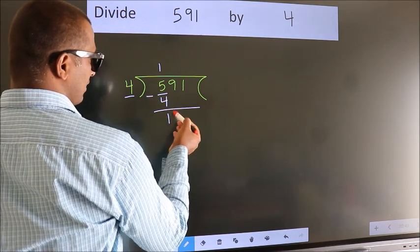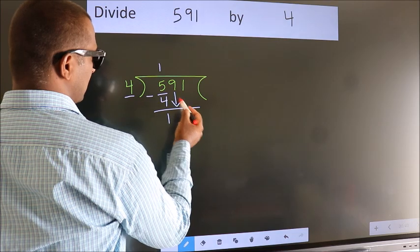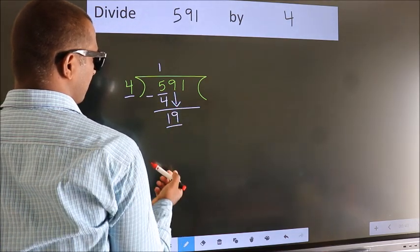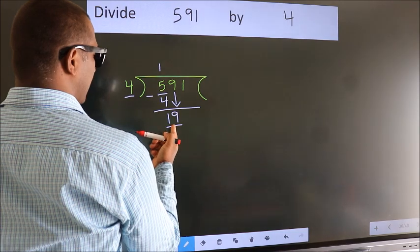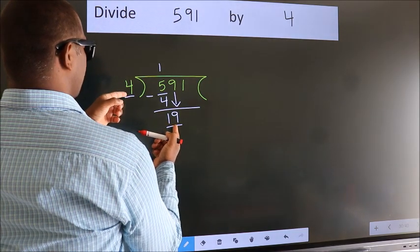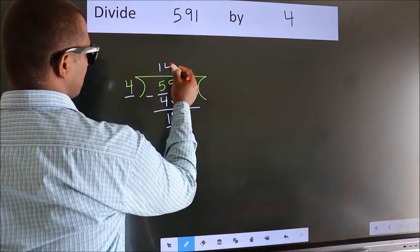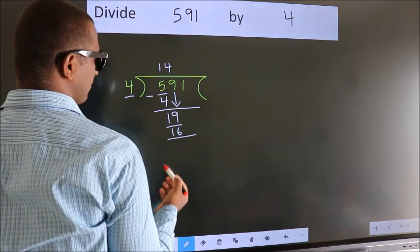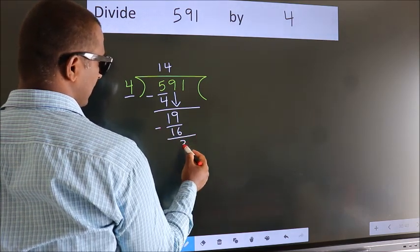After this, bring down the beside number. So 9 down. Now 19. A number close to 19 in the 4 table is 4 4s, 16. Now we subtract. We get 3.